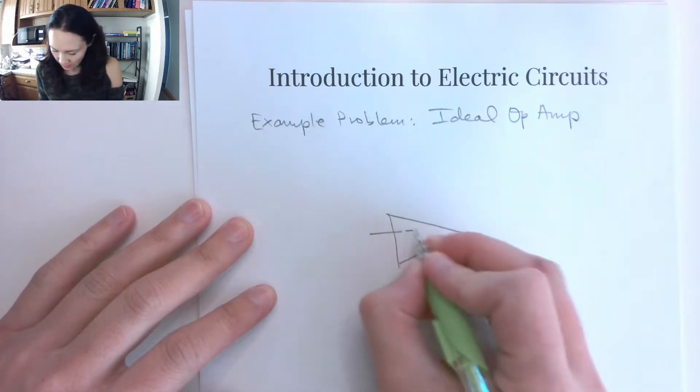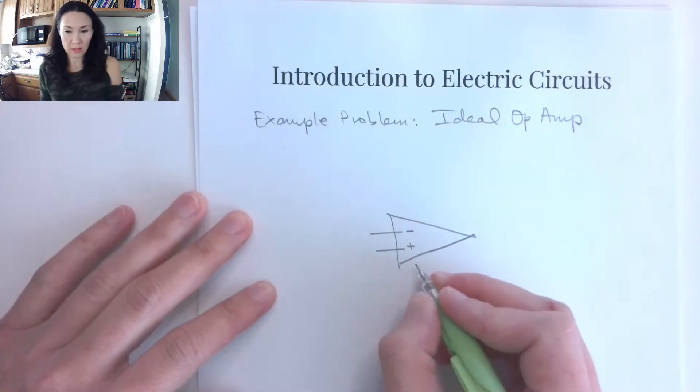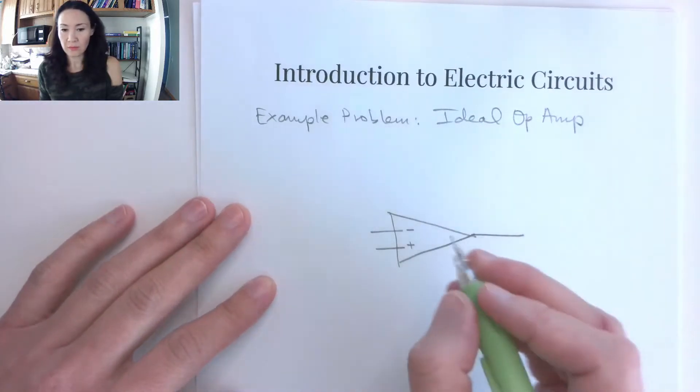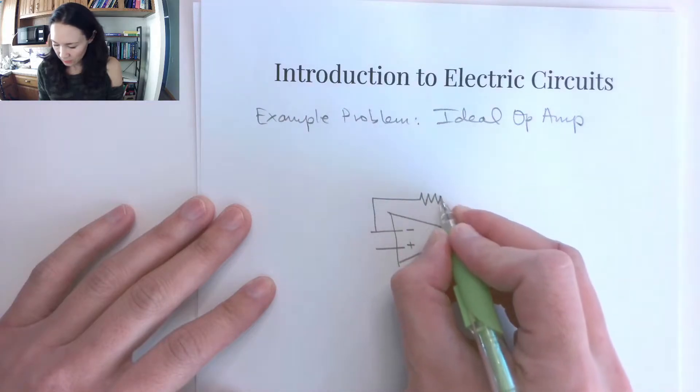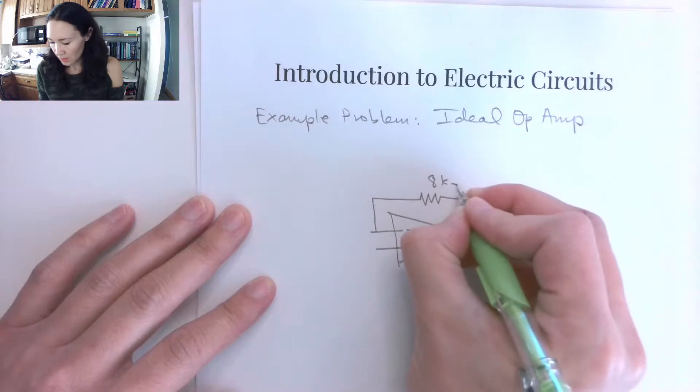Let's let the inverting terminal be on top and the non-inverting input be on the bottom. And then here is our Vout. Suppose we have a feedback loop, and in the feedback loop we have a feedback resistor of value 8k ohms.